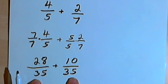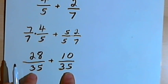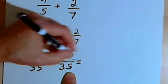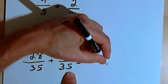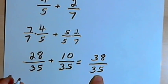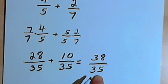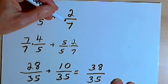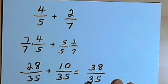Now I've got the same denominator for both my fractions. I've got 28 over 35 and 10 over 35, so I can just add the numerators: 28 plus 10 is 38, and the denominator will be that common denominator, which is 35. So I'm going to get 38 over 35 when I add 4 over 5 plus 2 over 7. I want to check and make sure I can't reduce 38 over 35 — I can't, so that would be my final answer.